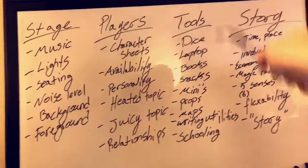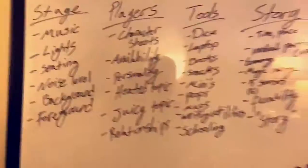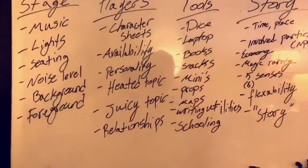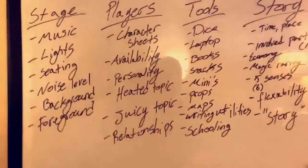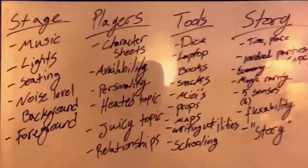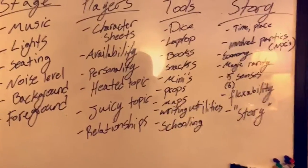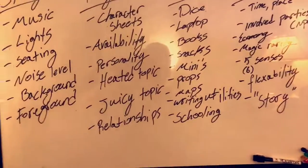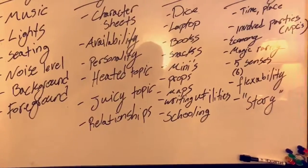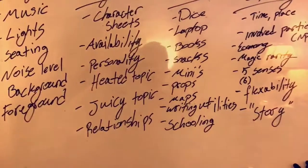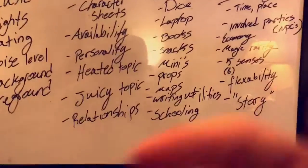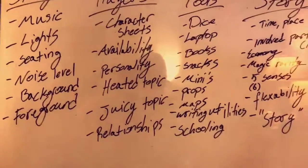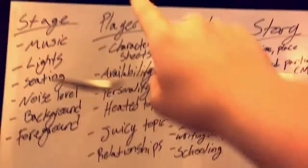Alright, next one — that's your Players. You've got your character sheets, that's pretty self-explanatory: know your characters. Availability — when are your players able to play, because you need to have as many players at your table as possible. Personality type — what do your players do, how do your players think? These are things you need to know, you need to develop these relationships with your players. Also: heated topics — what topics are not available at your table that you have to avoid. Juicy topics — what do you guys like, like Skyrim or Game of Thrones? Add those kinds of things in. And relationships — how long you guys have known each other, the inside jokes, keeping those to a minimum if you have new players.